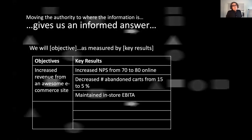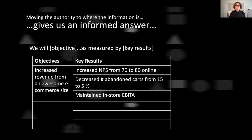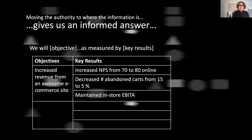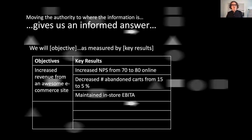Keeping it simple: if we are moving the authority where the information is, we will also get an informed answer back — the intent loop. So we want to have increased revenue from an awesome e-commerce site. But how do we measure that? Let's get into a room and discuss the possible key results. An increased NPS will probably generate returning customers. Decreasing the abandoned carts has a direct connection to revenue. But we still have a guarding key result: let's not bring down the physical stores in order to gain a new market in e-commerce.